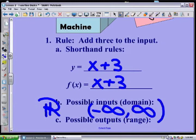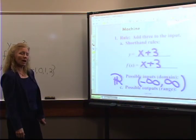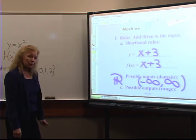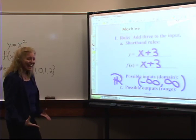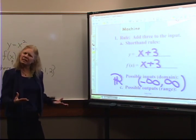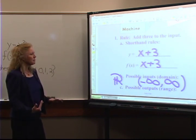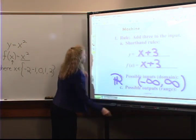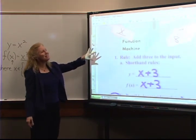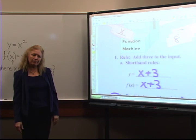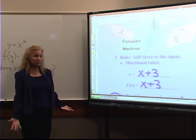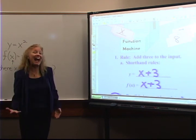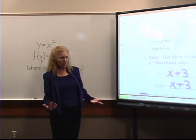So I can write the domain in a couple of ways: I can use the script R which stands for the real numbers — all those numbers on the number line. I can also show it in interval notation: an opening parenthesis, negative infinity up to positive infinity, with an open parenthesis on the end. Now what are possible outputs? Do you think there's any answer I can't get?